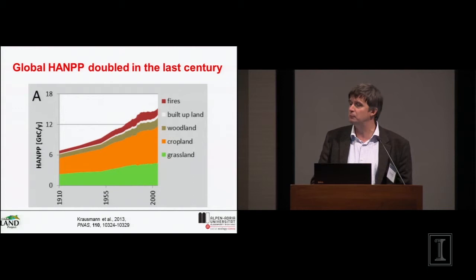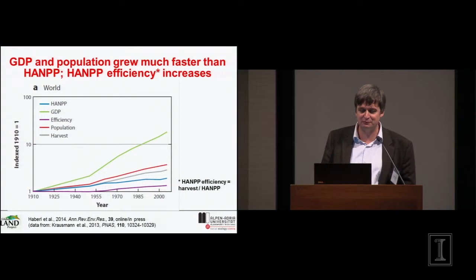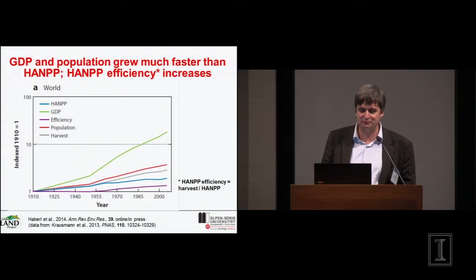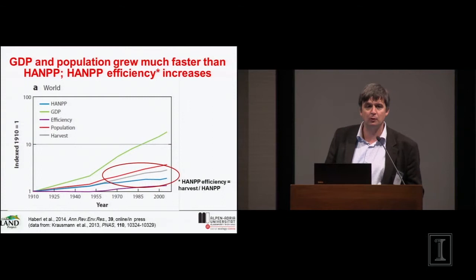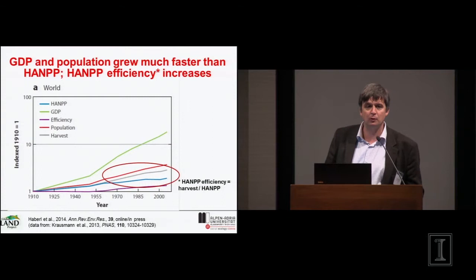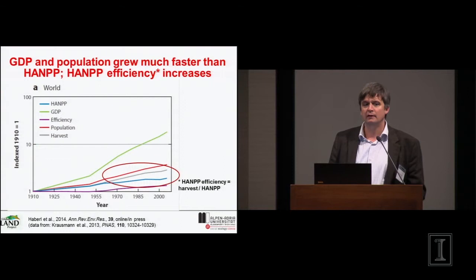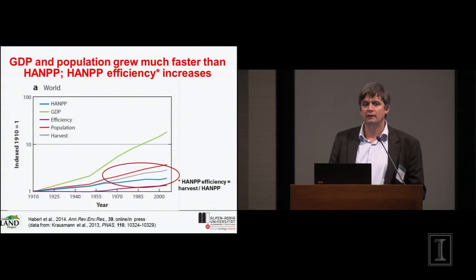Looking at the last 100 years, HANPP has more or less doubled globally. The green line is global GDP, the red line is population, and the blue line — HANPP — has gone up quite a bit less than GDP or population, so we have increased efficiency. The gray line is harvest, and especially since the 1950s, we have increased harvest a lot more than we have increased HANPP. This represents increasing land use intensity and increasing land use efficiency.